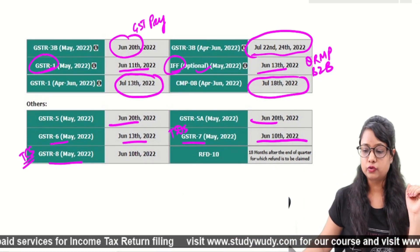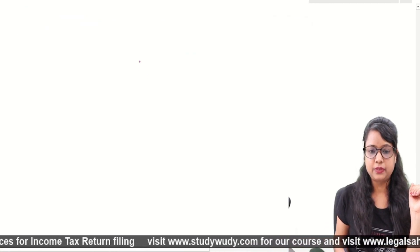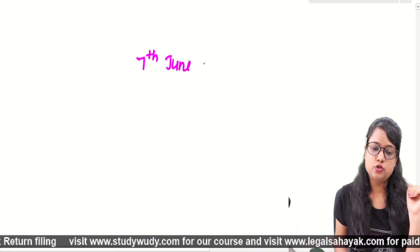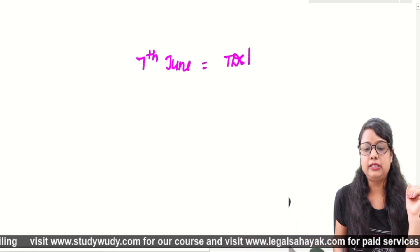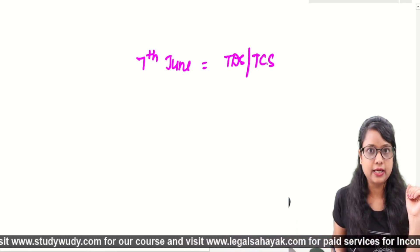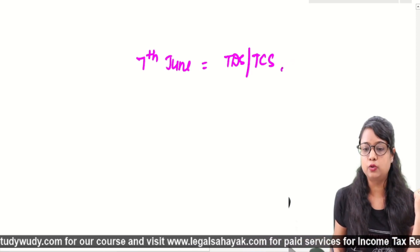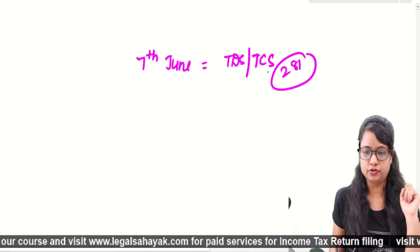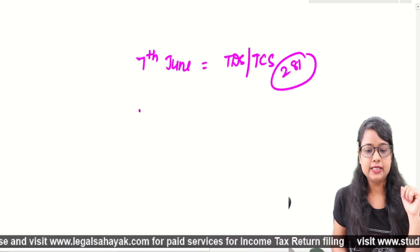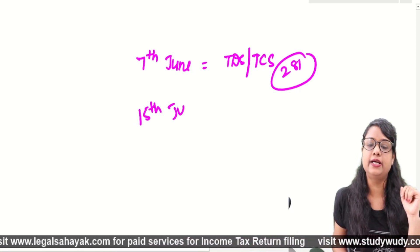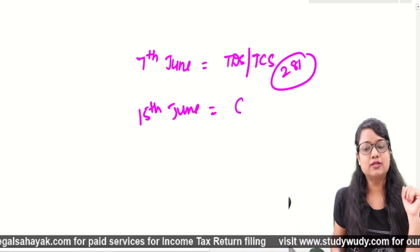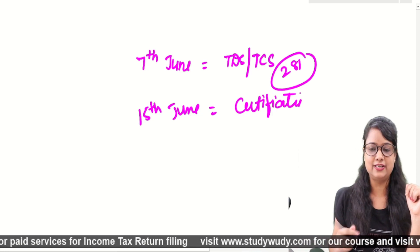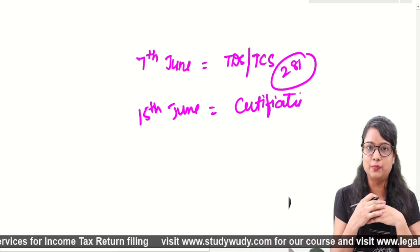Now moving on to the income tax dates. The first date for income tax is 7 June — if you have deducted TDS or TCS in May, you have to pay it to the government through Challan 281. Don't forget it, as there are complications if missed. The next date is 15 June. One item on 15 June is a TDS certificate — if you are a TDS deductor, you have to issue certificates to deductees.